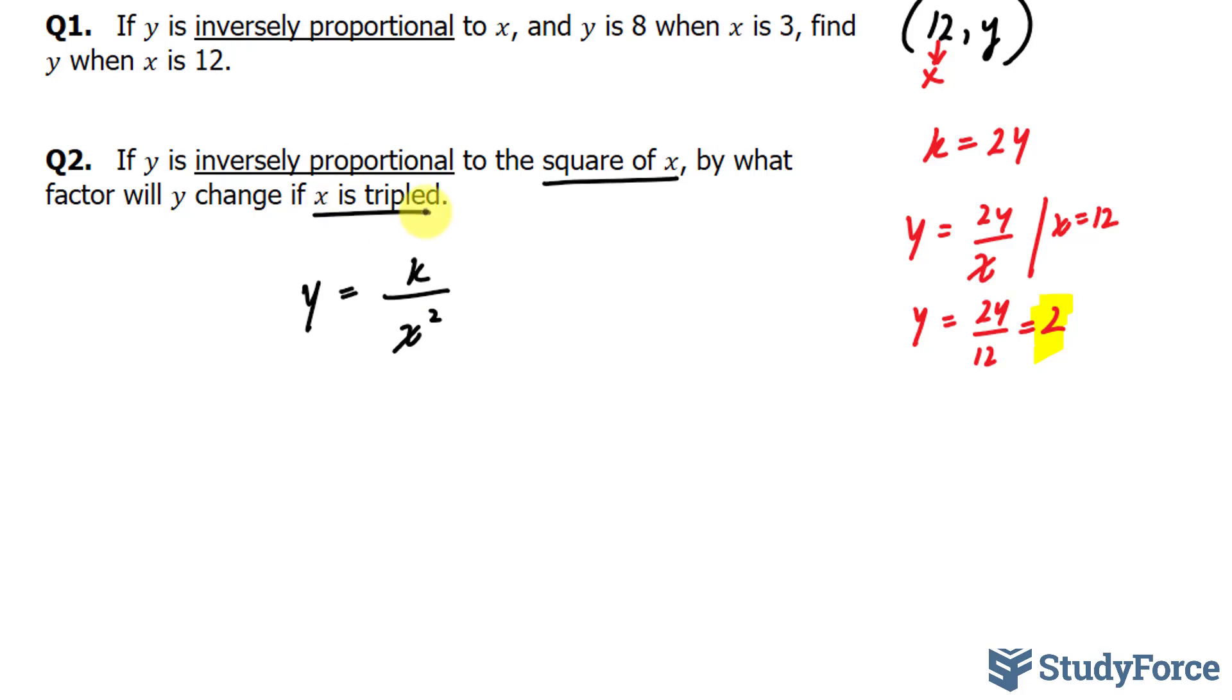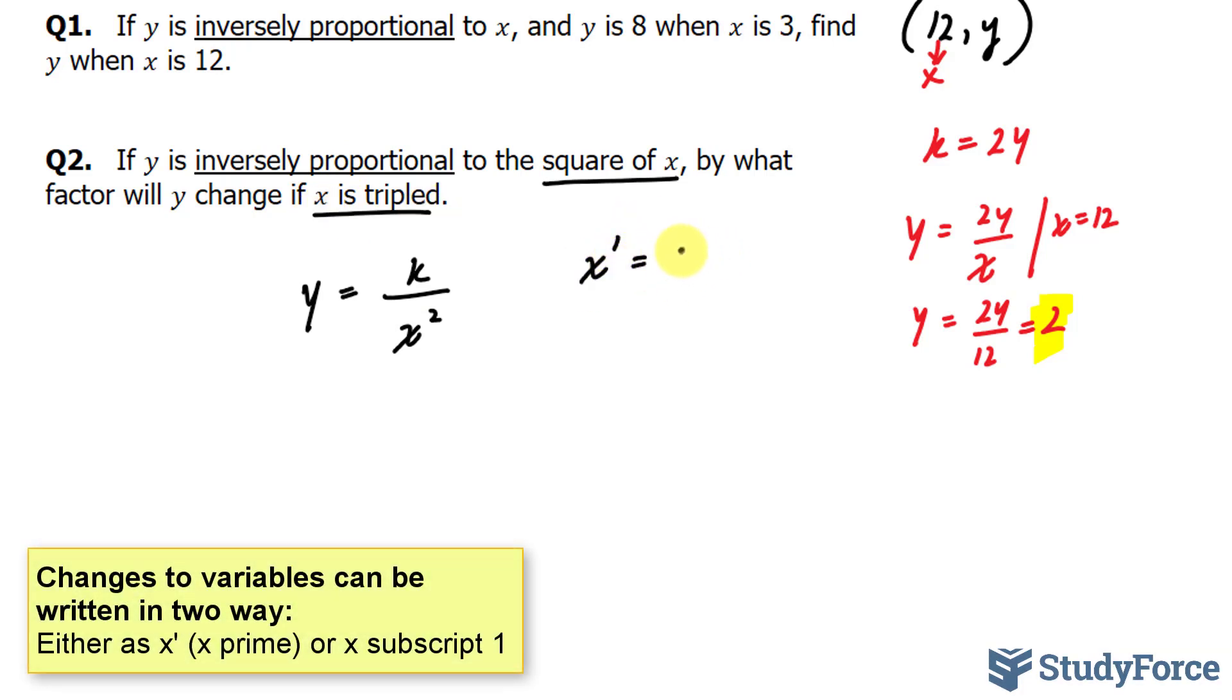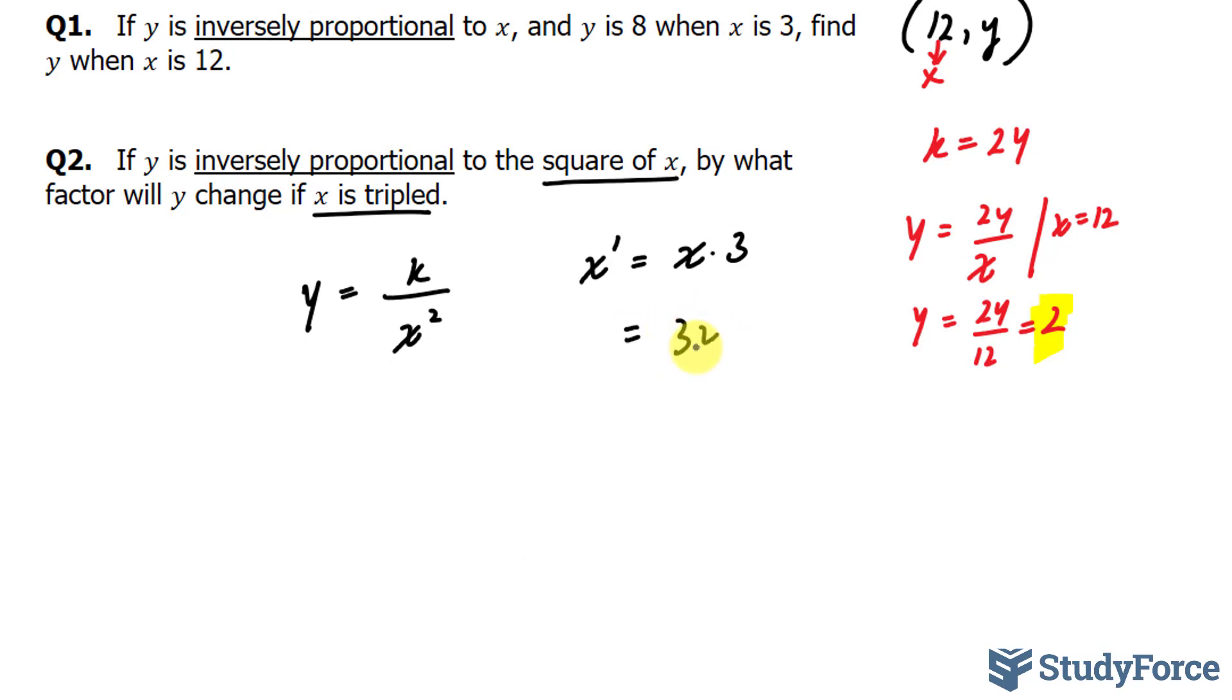To represent x being tripled, I'll write down x prime equals our original x times 3. Tripling x means you're multiplying it by 3. Rearranging this, we have 3x as our x prime. Y prime will represent the change.